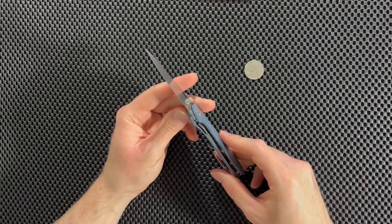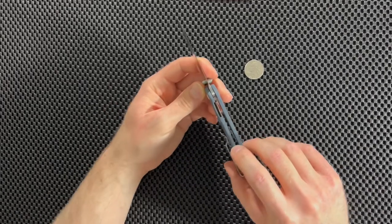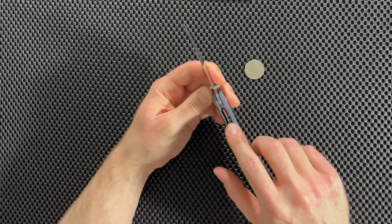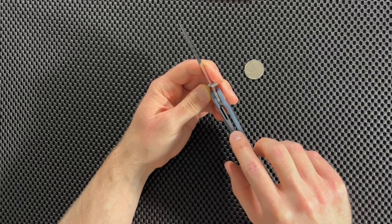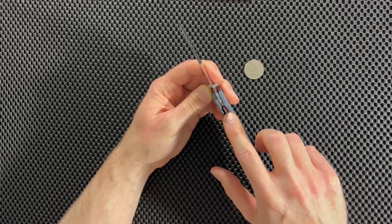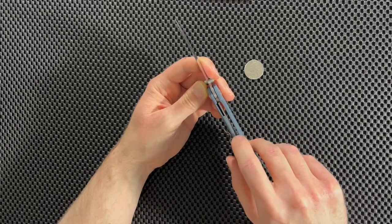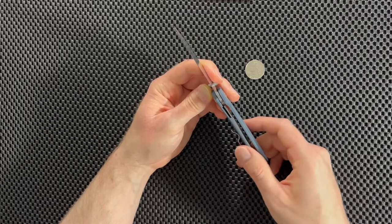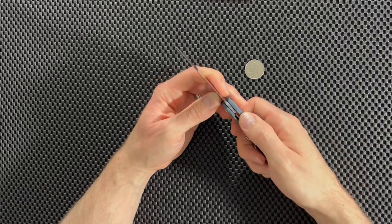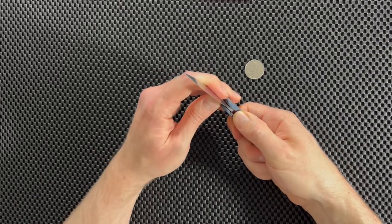All right. So next, let's talk about the locking mechanism. So you can see right here that the blade is locked out. And if you're not familiar with knives, then you could see here, there's a little spring pushing up against the blade, locking it out. And that is called a liner lock. So to close the blade, you just push it to the side and close.